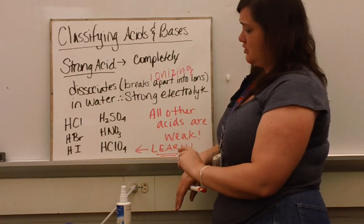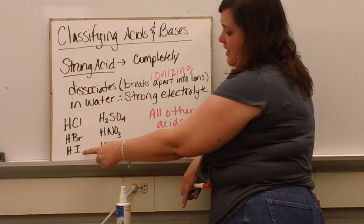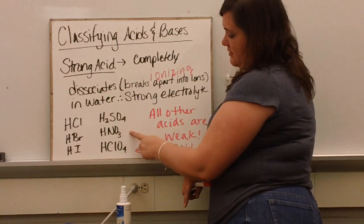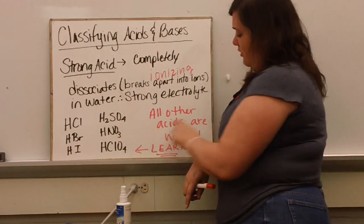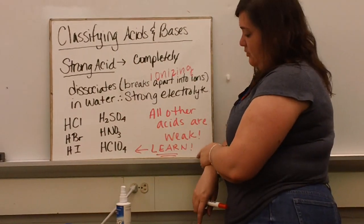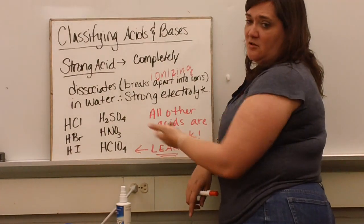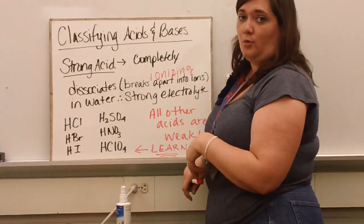There are six strong acids: hydrochloric, hydrobromic, hydroiodic, sulfuric, nitric, and perchloric. All other acids are weak. You need to learn these six. If you know these six, then you can identify any acid as strong or weak.